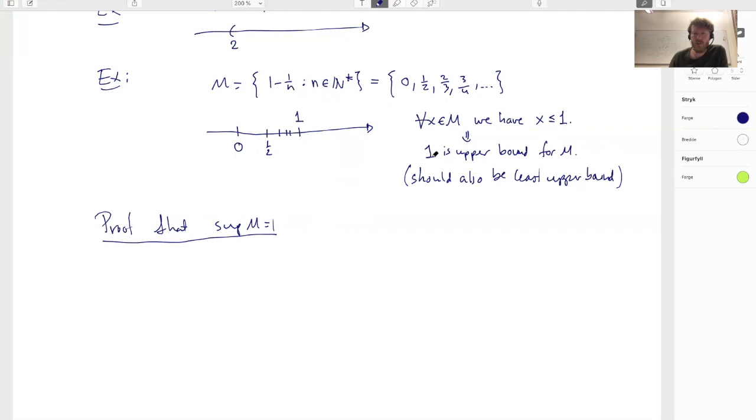So we already know that one is an upper bound. So to get a contradiction suppose M has upper bound, some upper bound d strictly smaller than one. If it doesn't have an upper bound strictly smaller than one then one has to be the smallest.